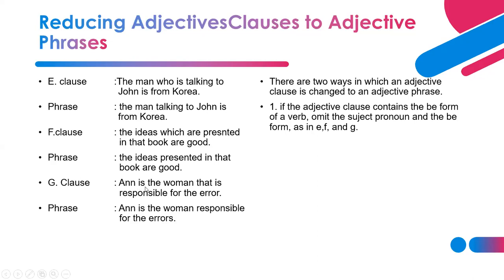Next: 'N is the woman that is responsible for the error.' Change to adjective phrase — remove 'that is,' leaving: 'N is the woman responsible for the error.' The sentence has no verb or predicate, so we keep the adjective 'responsible' there. There are two ways to change adjective clause to adjective phrase: if the adjective clause contains a to-be form, omit the subject pronoun and the to-be form.